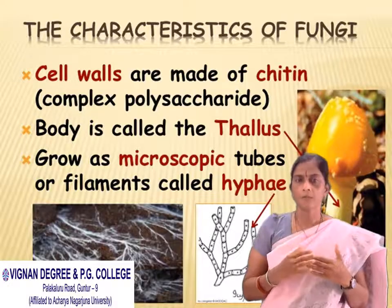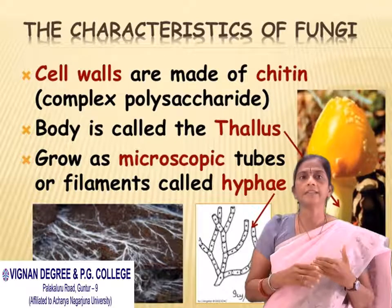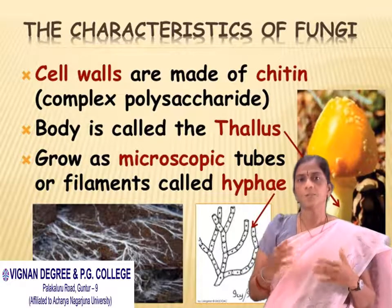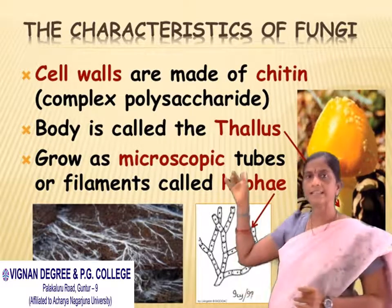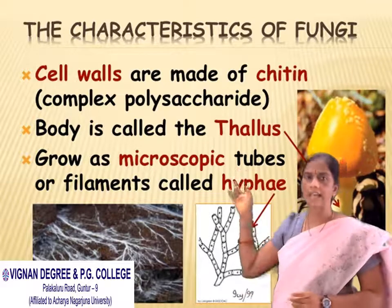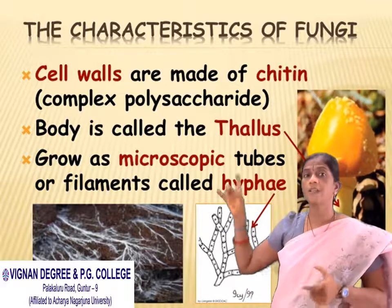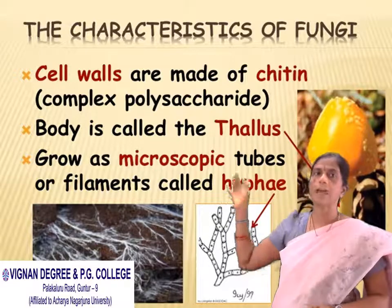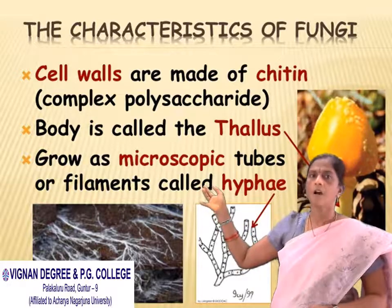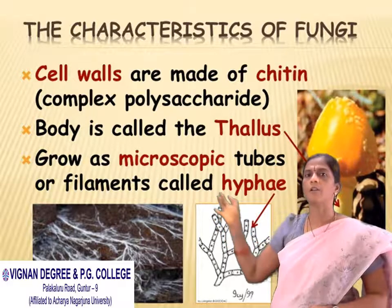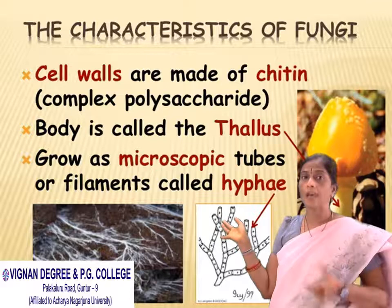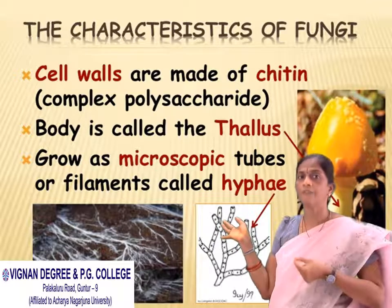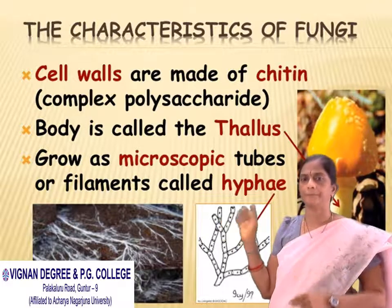Coming to the cell wall — it is made up of chitin, which is a complex polysaccharide. The body of the fungus is called the thallus. They grow as microscopic tubes or filaments called hyphae.